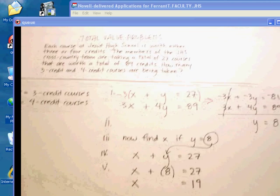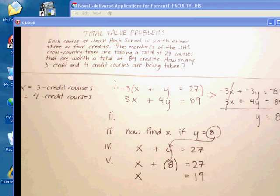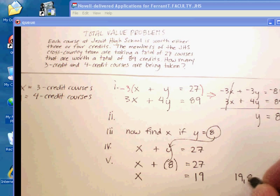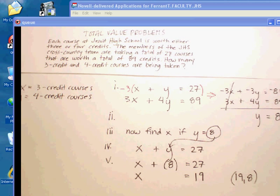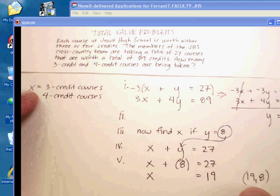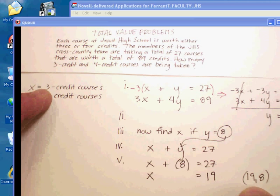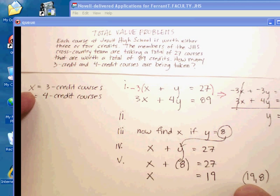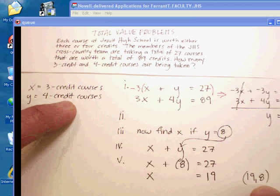So, according to my system of equations, solving it, X is 19, Y is 8. Now that we have the answer, let me go back and translate that. According to my answer here, I should have 19 three-credit courses, and I should have 8 four-unit courses.